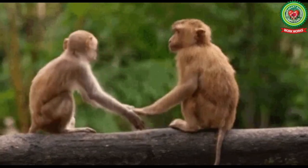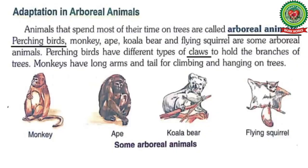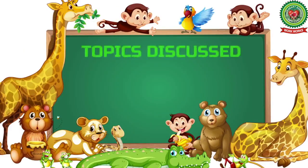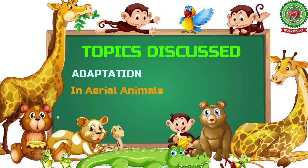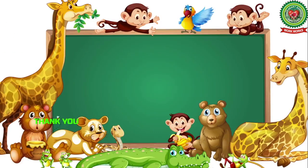The examples of arboreal animals are monkey, ape, koala bear, and flying squirrel. In today's class I have discussed with you adaptation in aerial and arboreal animals. Read and revise the topic thoroughly and also revise the cross questions. Thank you and have a nice day.